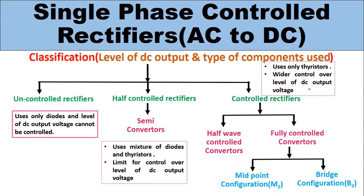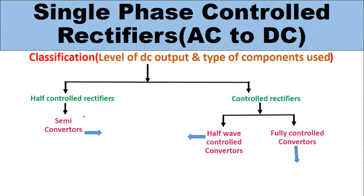In this lecture we are going to discuss fully controlled converters — specifically the bridge configuration, since the midpoint configuration was already covered. The half controlled rectifiers are one-quadrant operated rectifiers: the polarity of DC output voltage and output current is always positive in semi converters. The DC output voltage and current are of the same sign — both positive — therefore half controlled rectifiers operate in the first quadrant.